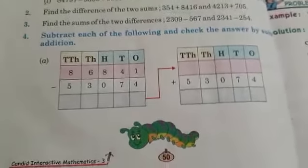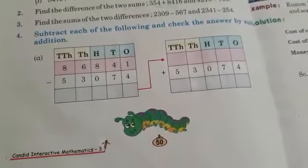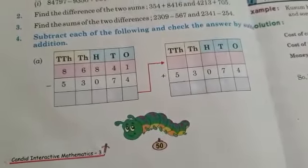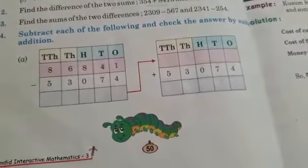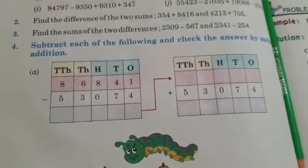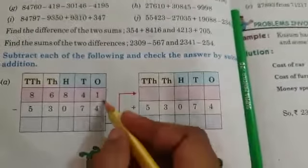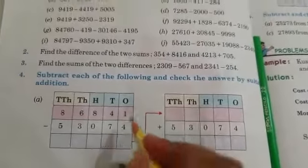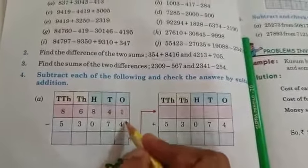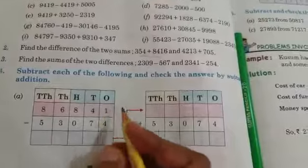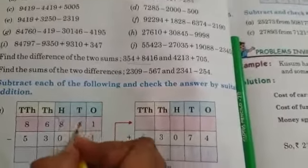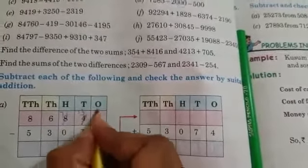Now, the next statement, that means the fourth sum is that we have to subtract each of the following and check the answer by suitable addition. Now, firstly, we have to subtract. Now, 4 cannot be subtracted from 1. Then, we will take the carry. 3 and 11.